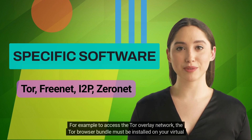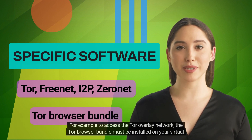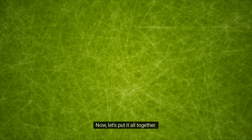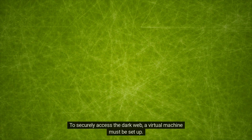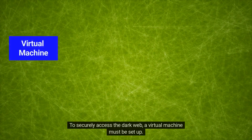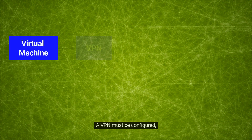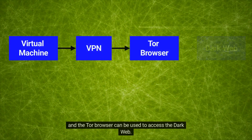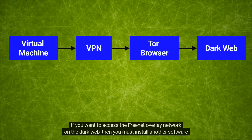For example, to access the Tor overlay network, the Tor browser bundle must be installed on your virtual machine. To securely access the dark web, a virtual machine must be set up, a VPN must be configured, and the Tor browser can be used to access the dark web.